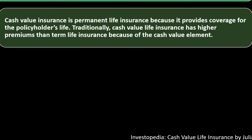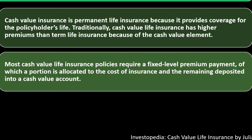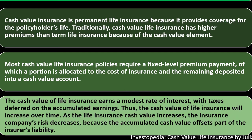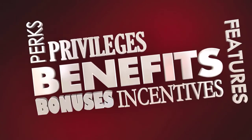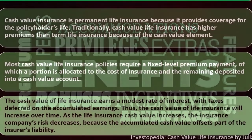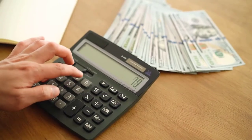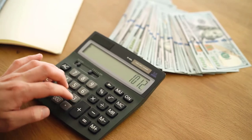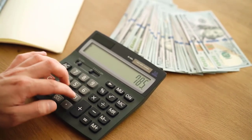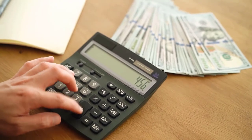Term life insurance is typically cheaper because it's purely life insurance with no investment component. Most cash value life insurance policies require a fixed level premium payment, a portion of which is allocated to the cost of insurance and the remainder deposited into a cash value account. The cash value earns a modest rate of interest with taxes deferred on the accumulating interest — similar to putting money into an IRA or 401k plan.